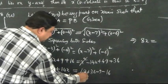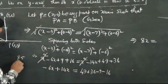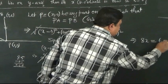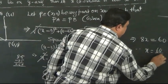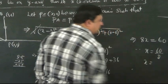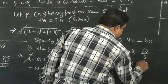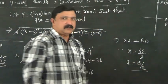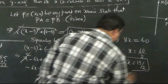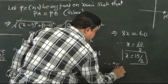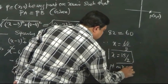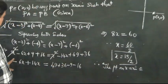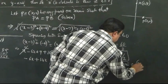So 8x equals 85 minus 25, which is 60. Therefore x equals 60 over 8, which reduces to 15 by 2. Therefore the point on the x-axis that is equidistant from (7, 6) and (3, 4) is (15/2, 0).